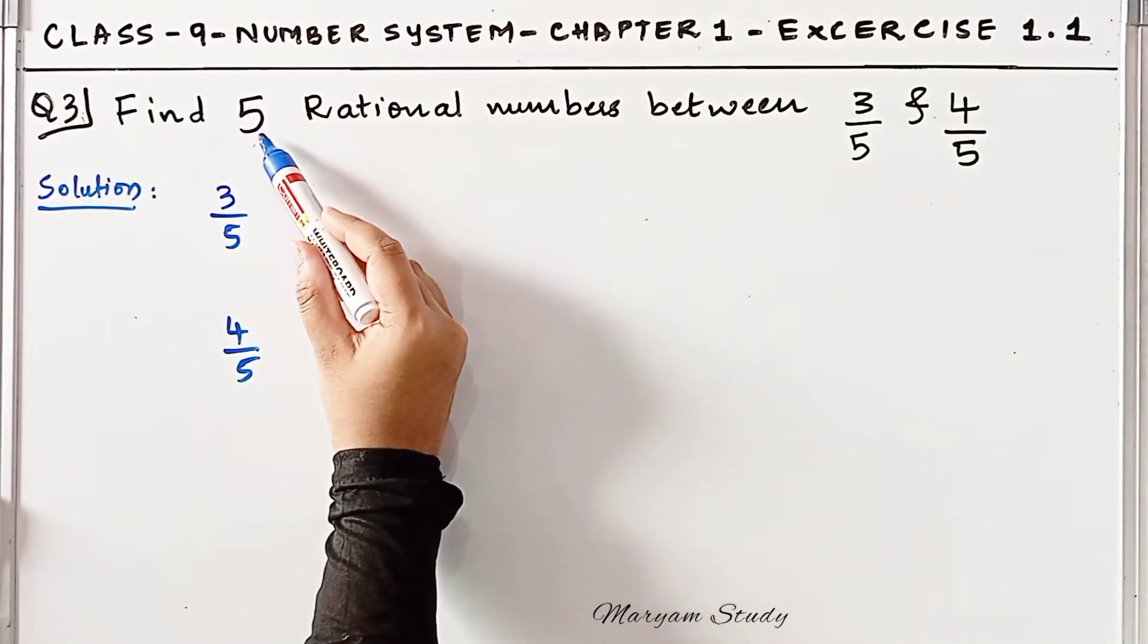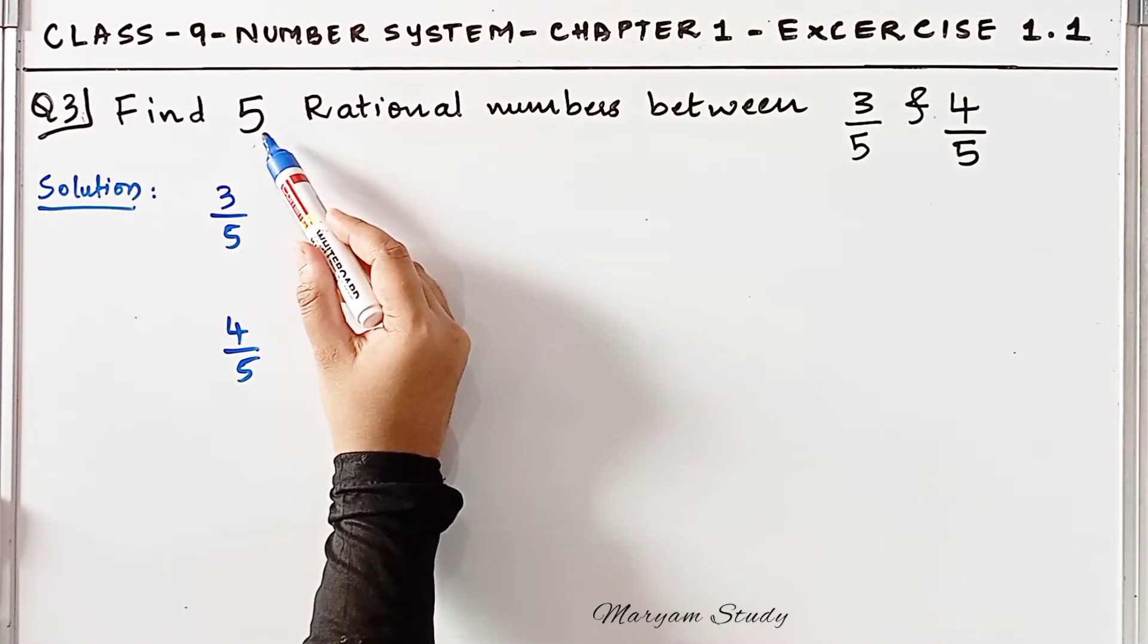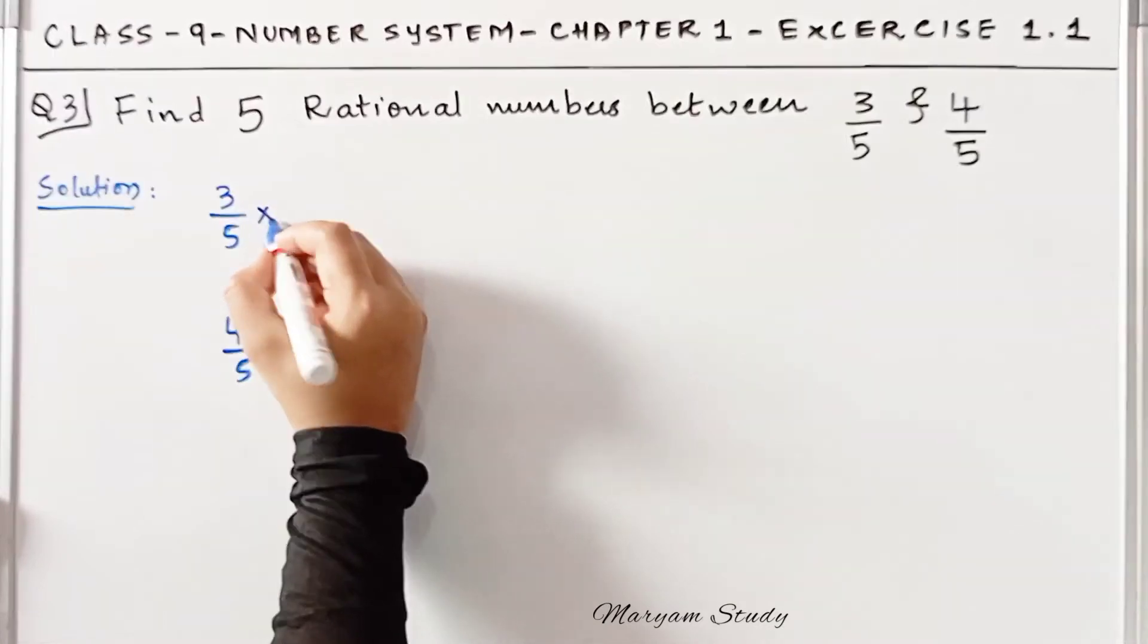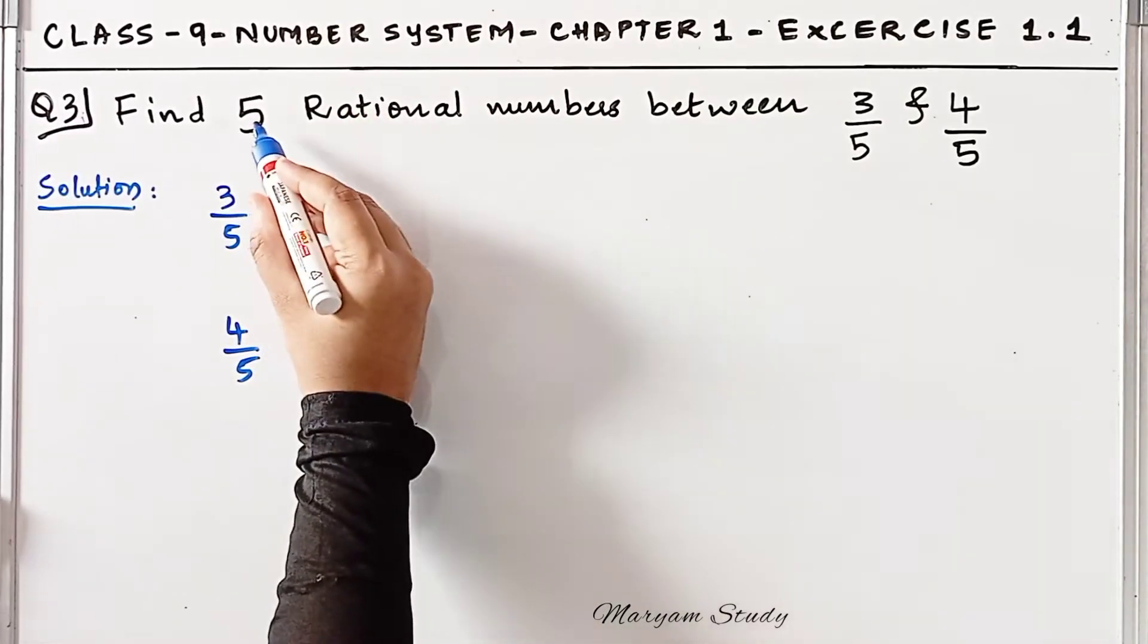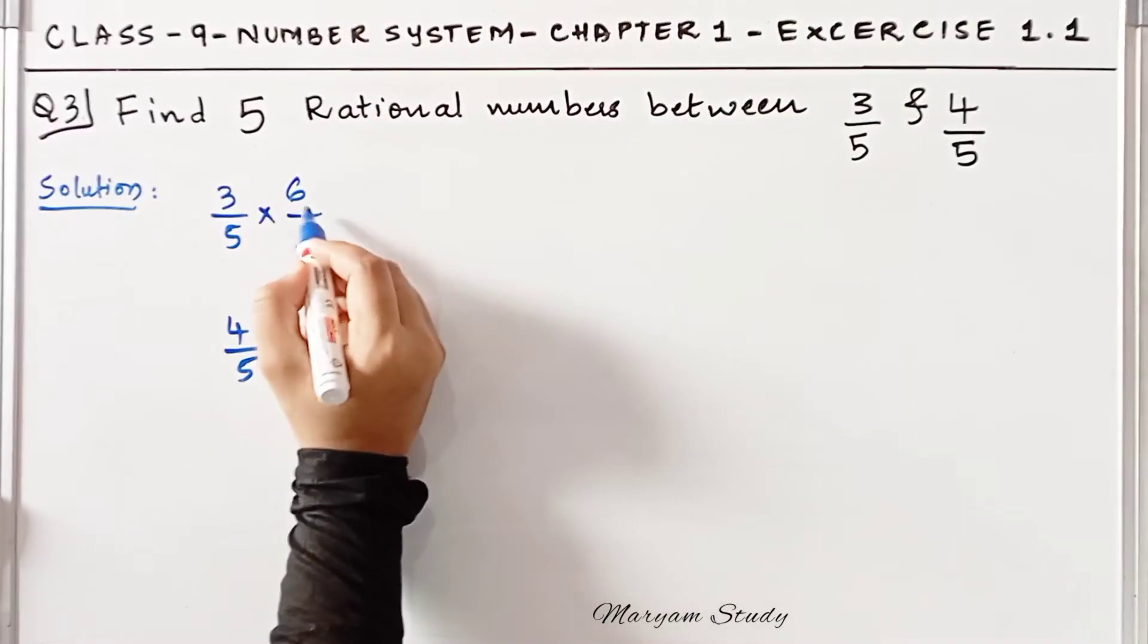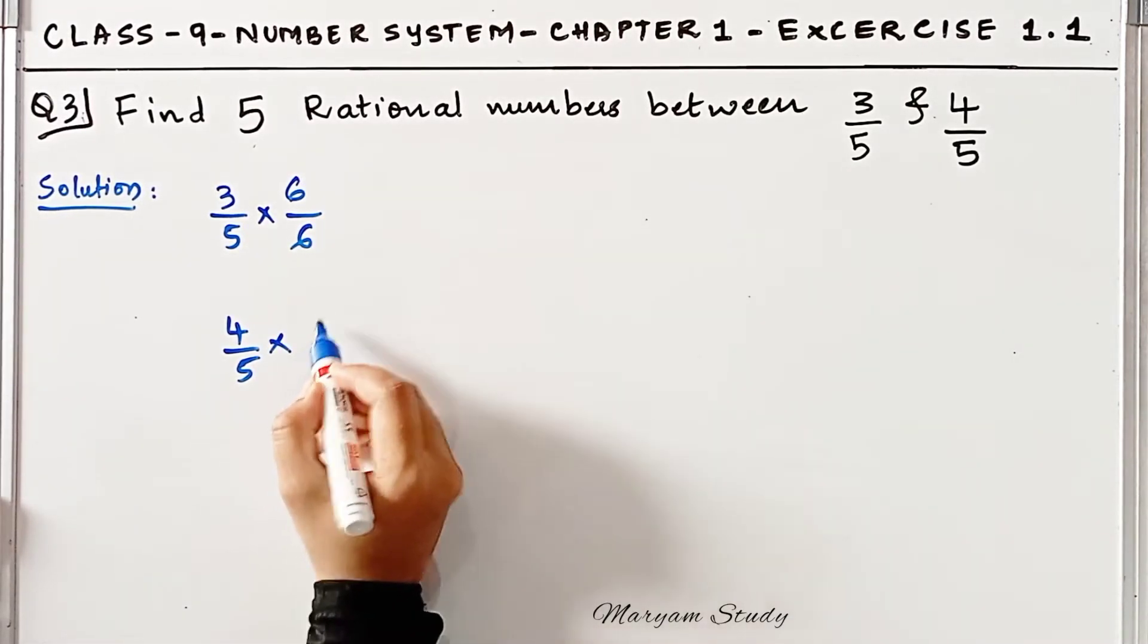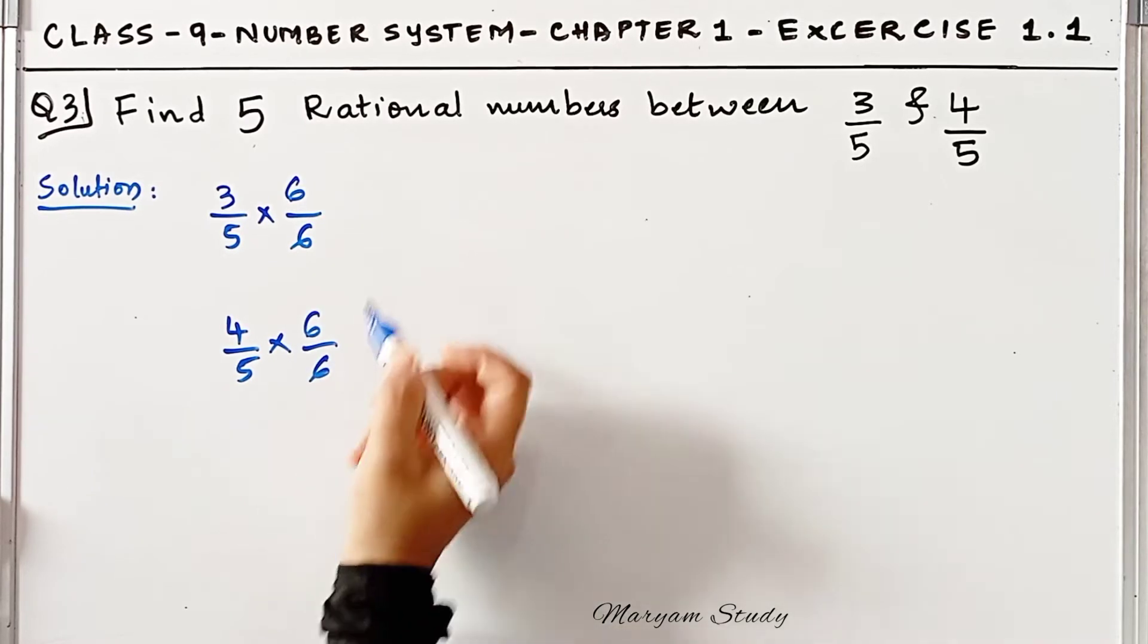We're asked to find 5 rational numbers. So what will we do? We'll increase the number by one—that is, we'll change 5 to 6 and multiply both fractions by 6. We'll do the same here, multiply or divide by 6.